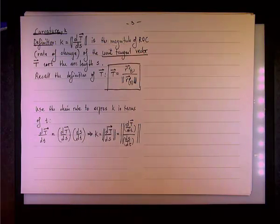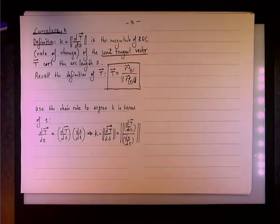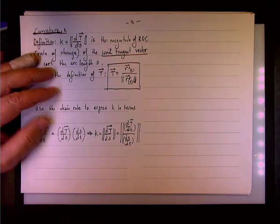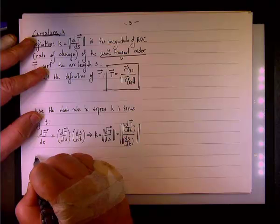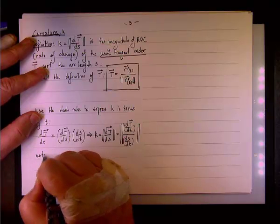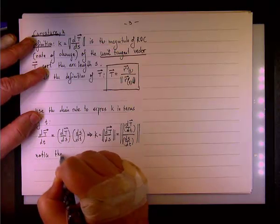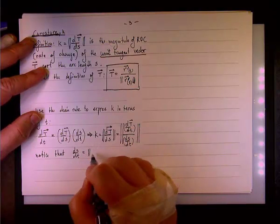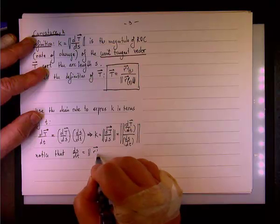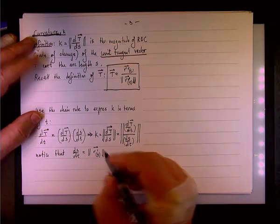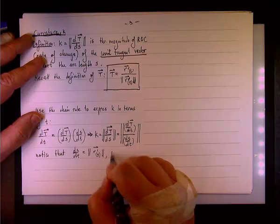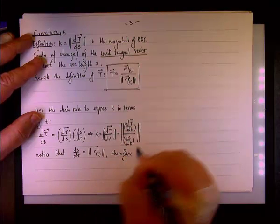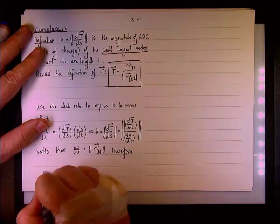So, but we can simplify it quite a bit, isn't it? dS/dT is what? R prime, right. So notice that dS/dT is the magnitude of R prime. So therefore, we have the following result.